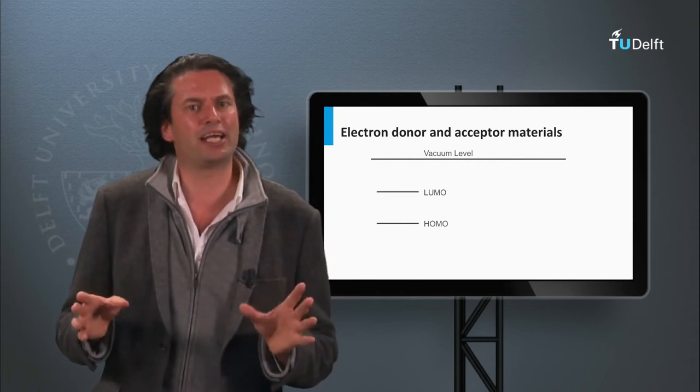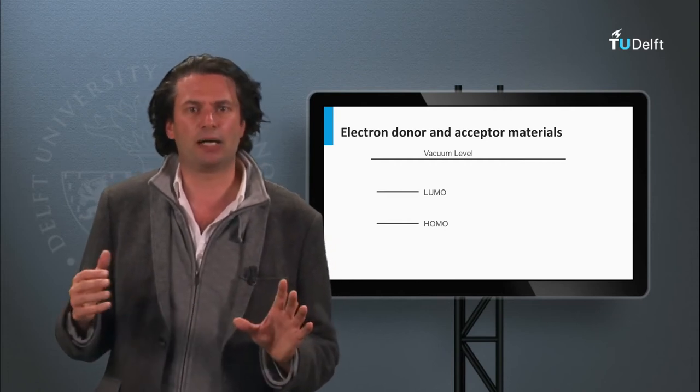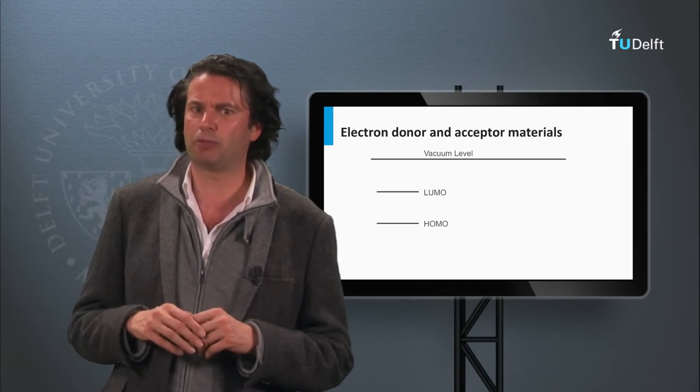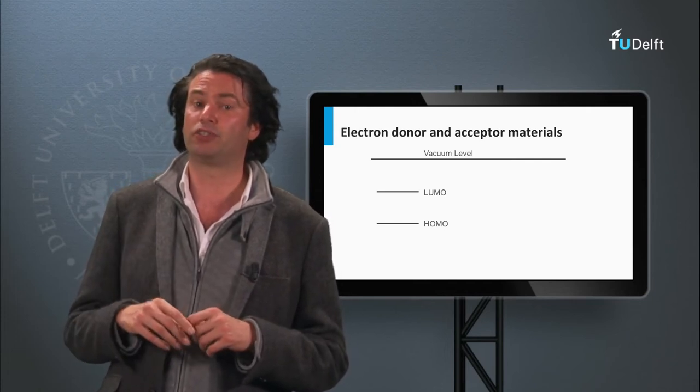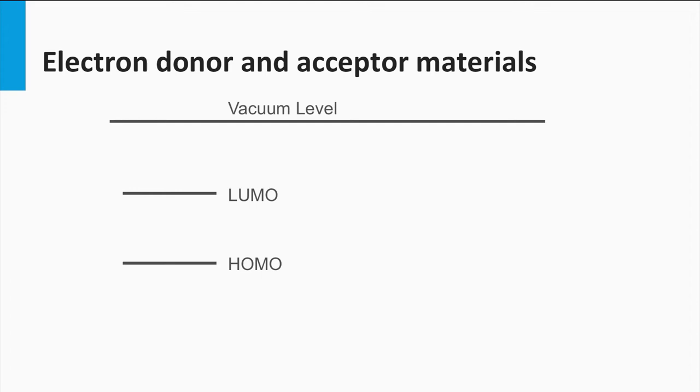To discuss whether an organic material is p-type or n-type, we have to discuss one concept which I did not discuss so far: the vacuum level. The vacuum level refers to the energy of a free stationary electron that is outside of any material, or in other words, in a vacuum. This level is often used as the level of alignment for the energy levels of two different materials.